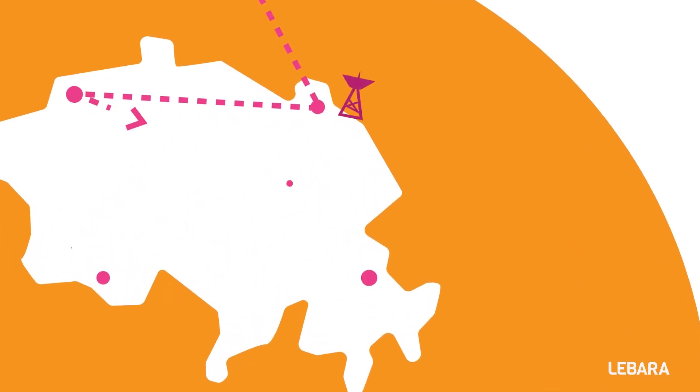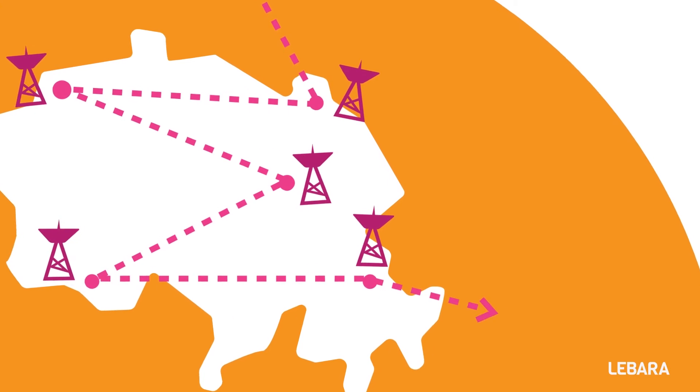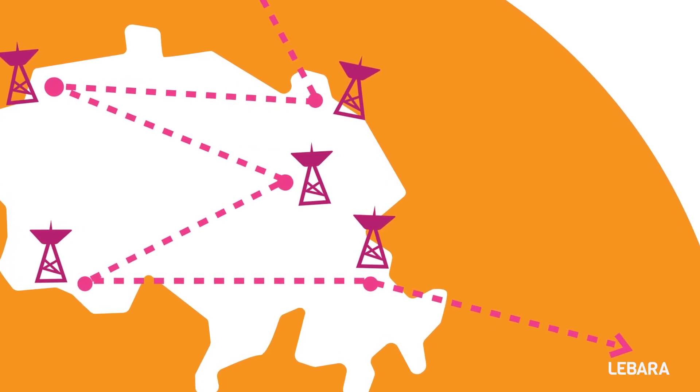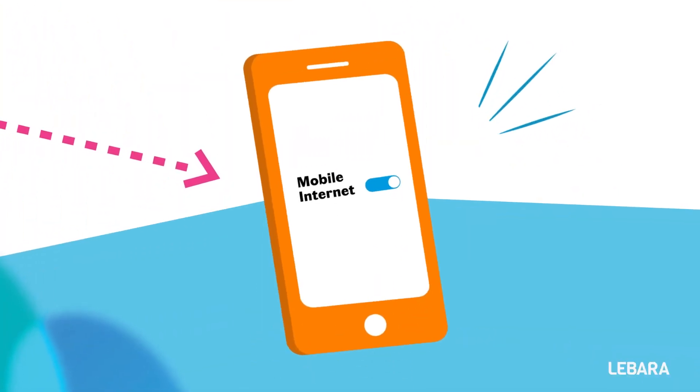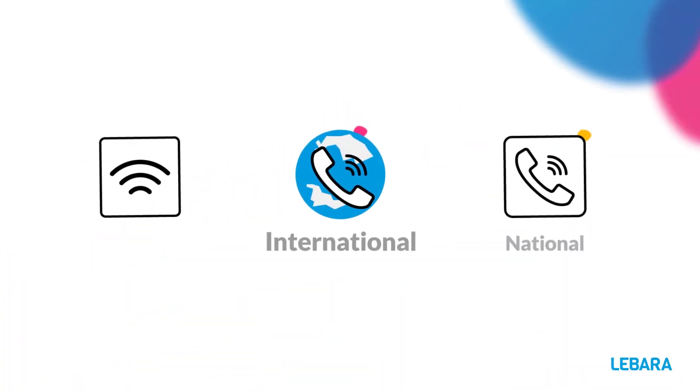If you are living in Swiss border regions, you can adjust your mobile phone settings so that you are not automatically connected to networks abroad that could result in additional and unexpected costs. In addition, you can also block the roaming function in MyLabara.